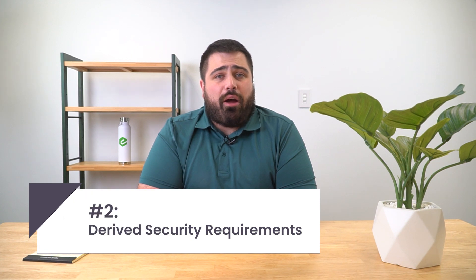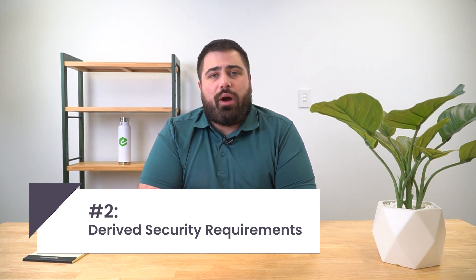Second, Derived Security Requirements. NIST derived the other requirements by tailoring the SP-853b Moderate Security Baseline. This tailoring focused on protecting CUI from unauthorized disclosure in non-federal systems. Appendix E of the SP-800-171 specifies these tailoring actions: removing controls not related to protecting the confidentiality of CUI, removing controls that were the responsibility of the federal government, and removing controls NIST assumed non-federal organizations would implement without specification.